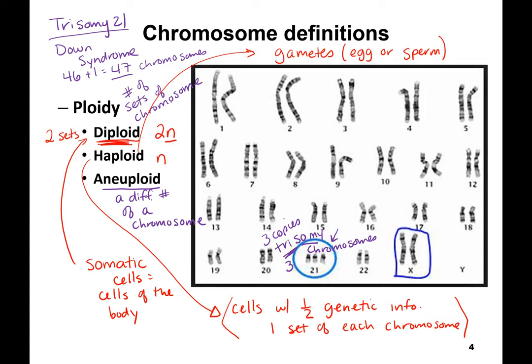If someone has trisomy, they're going to have more than the standard person. So we've got diploid — you have two sets; haploid — you have half of that, so one set; and aneuploid — you have a different number.